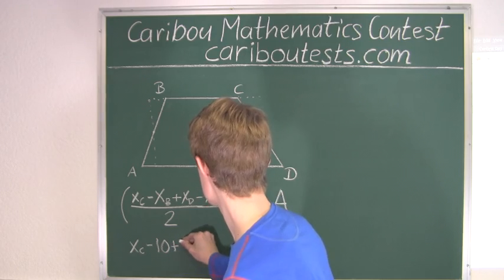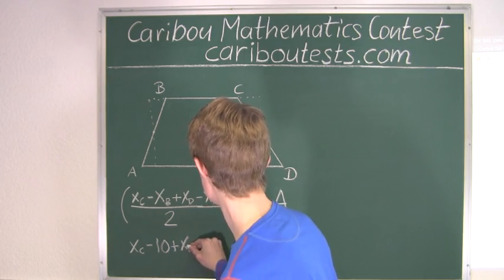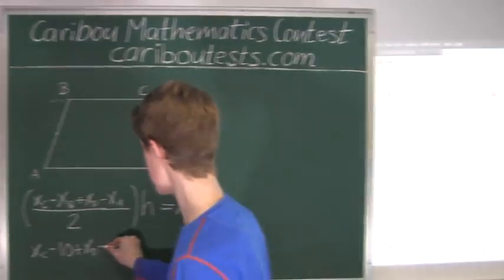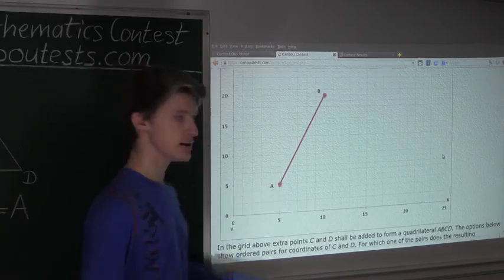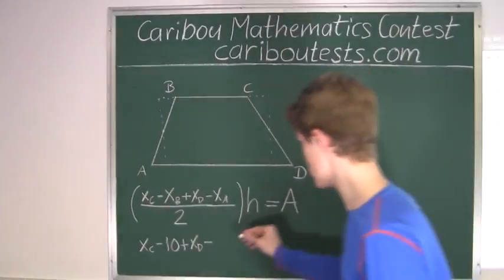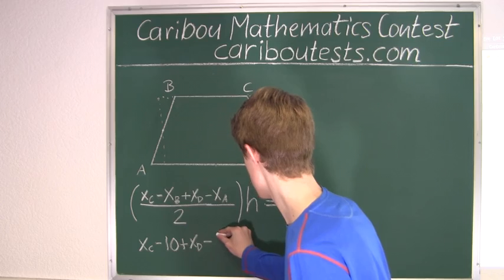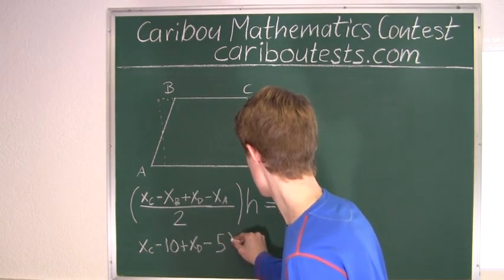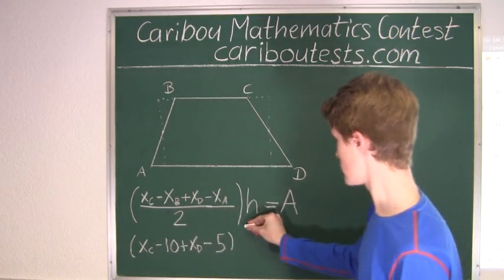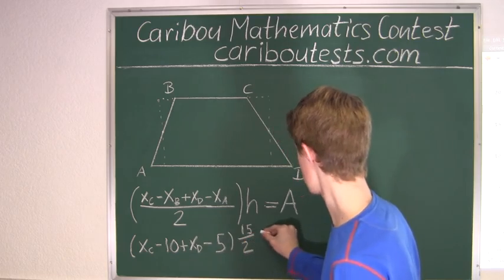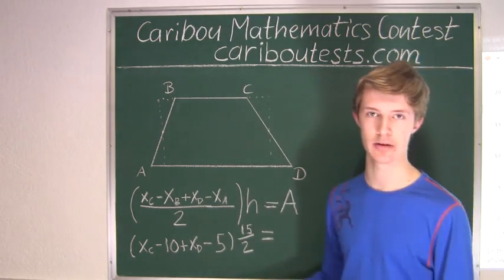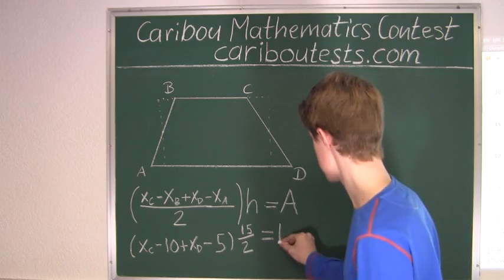And then we have plus xD, which we don't know, minus the x-coordinate of point A, which we can see is 5. And that, of course, is in brackets, times 15. And this must be equal to 150 squared units, because that is the area.